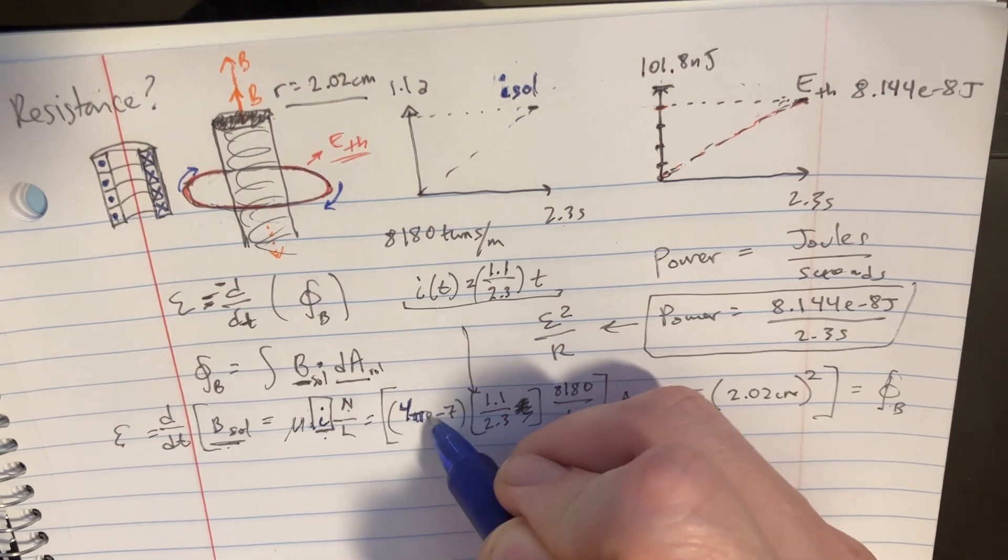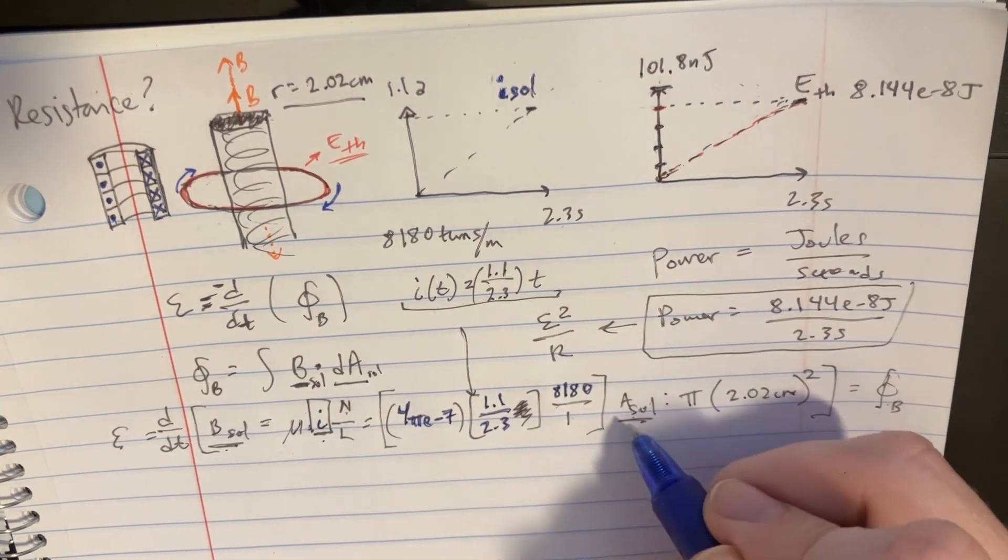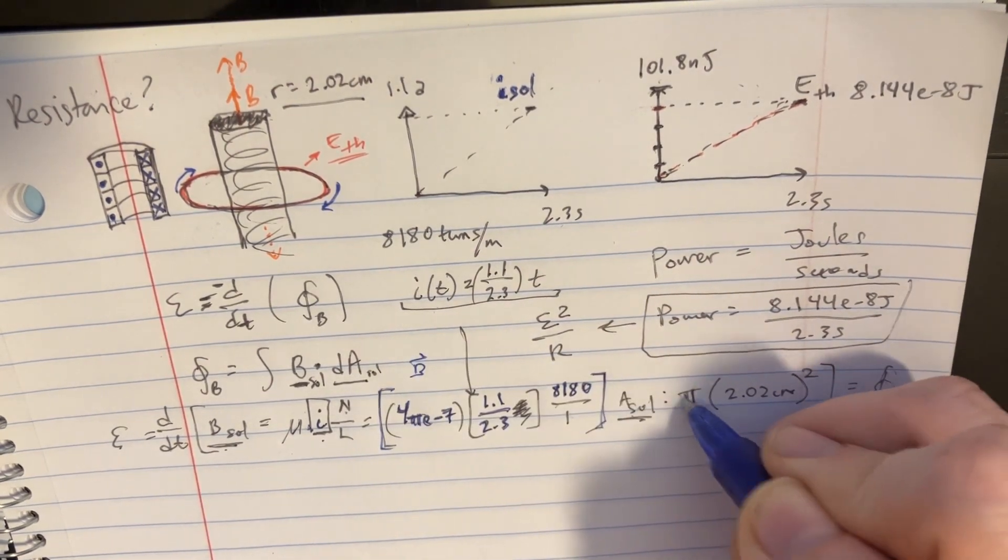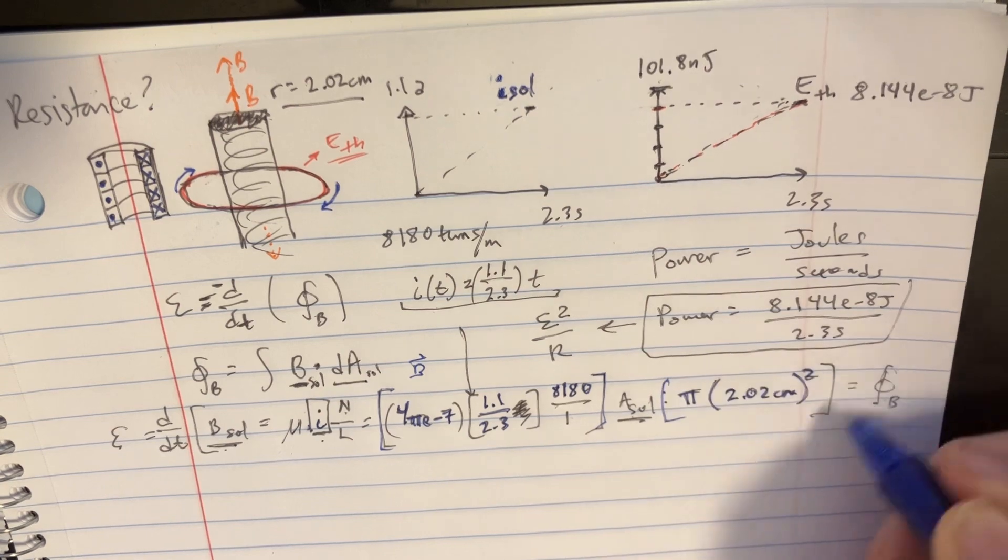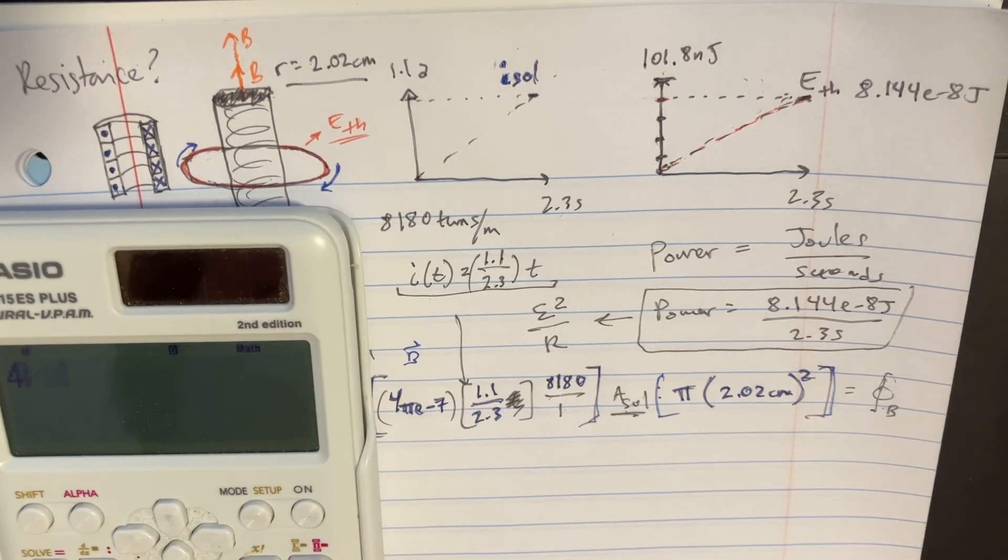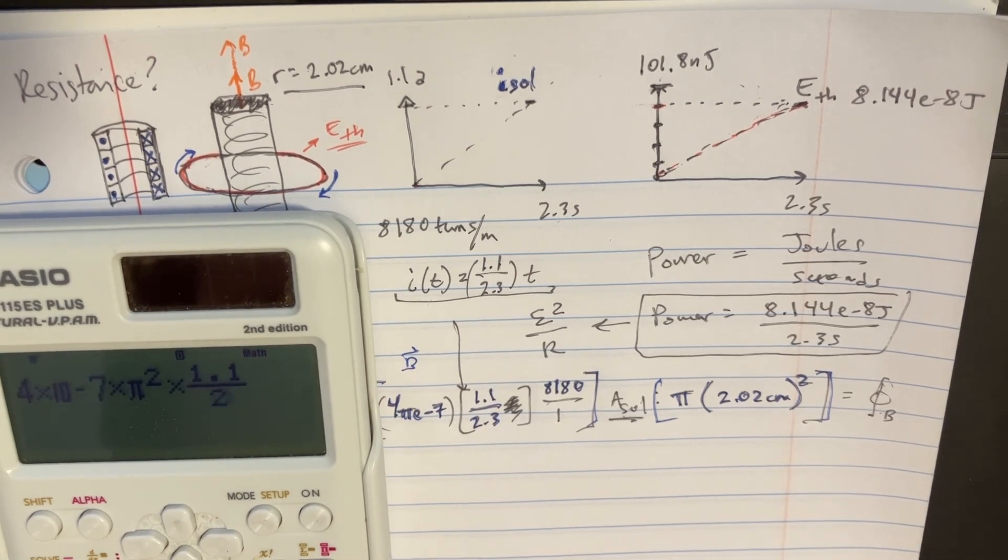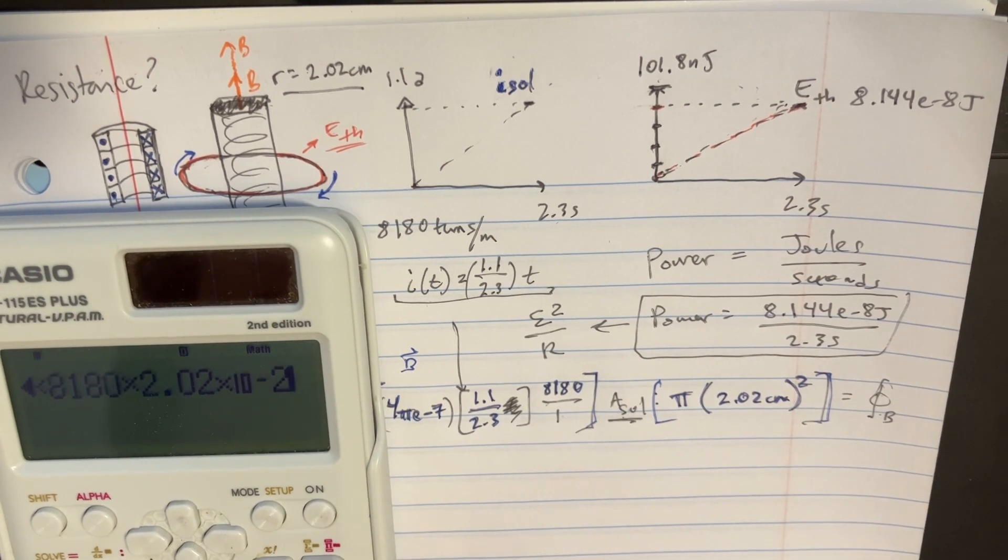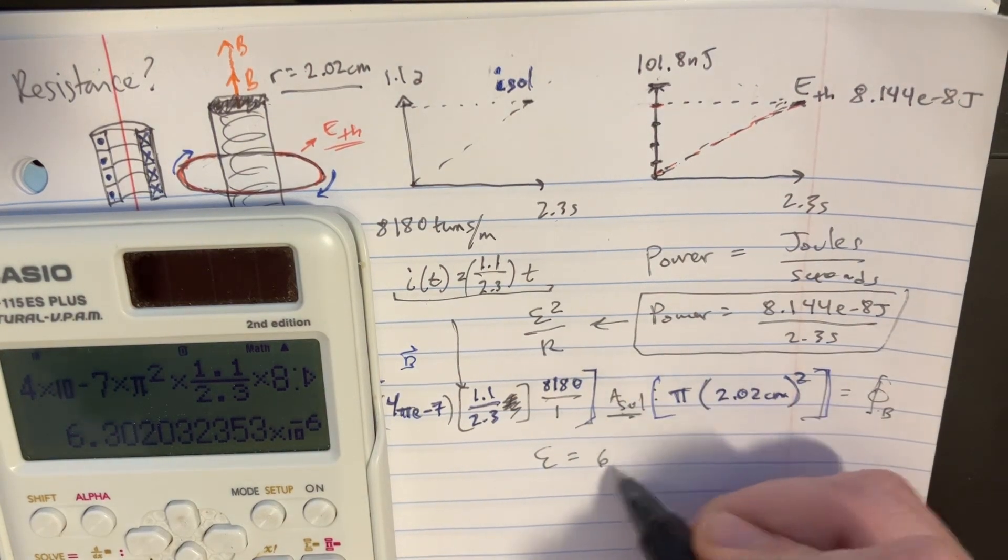So we have 4 pi e to negative 7, 1.1 over 2.3, 8180 over 1 - this is the first like B part here. And then over here there's the A part: pi, 2.02 centimeters squared. And that's literally the EMF. Let's get the multiplying these two things: 4 e negative 7, put the pi in there. I guess I could square the pi because there's two of them. Then we'll have 1.1 over 2.3, and there's going to be the 8180, and then there's going to be this thing 2.02 e negative 2 squared. All right, so we have the EMF being equal to 6.3 microvolts.